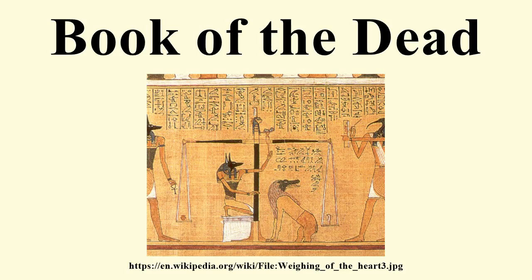The Book of the Dead is made up of a number of individual texts and their accompanying illustrations. Most sub-texts begin with the word 'rw,' which can mean mouth, speech, a chapter of a book, spell, utterance, or incantation. This ambiguity reflects the similarity in Egyptian thought between ritual speech and magical power. In the context of the Book of the Dead, it is typically translated as either 'chapter' or 'spell.' At present, some 192 spells are known, though no single manuscript contains them all.